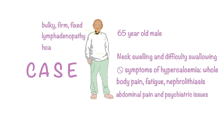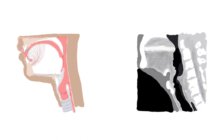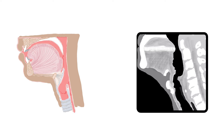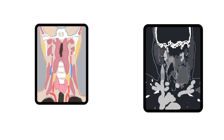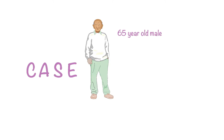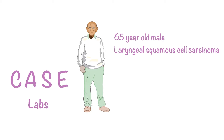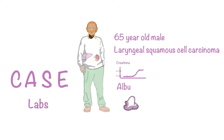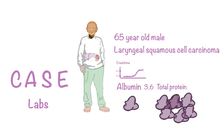His neck exam reveals bulky, firm, fixed lymphadenopathy on the left side of his neck with a hoarse voice, but he has no difficulty managing his secretions. He is rushed to a CT scan ordered in the ER, which reveals a large ulcerated supraglottic neoplasm. There was no evidence of airway narrowing, but there was compression of the left internal jugular vein with associated thrombosis. He had been a longtime smoker and biopsy revealed laryngeal squamous cell carcinoma, with no distant metastases on further imaging.